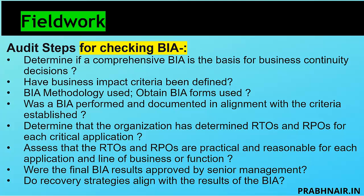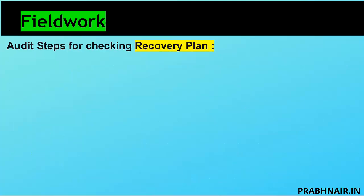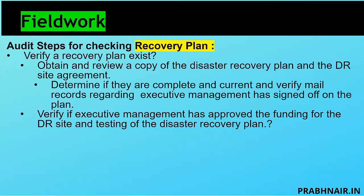After BIA validation, we look for the recovery plan. Based on the BIA, we prepare the recovery strategy, which drives the DR recovery plan. We check whether the plan is accurate. First, we verify the recovery plan exists — we obtain and review the copy of the DR plan, determine if it is complete and current, verify mail records, and compare the completion date of the DR plan's revision history against the mail records. We also verify if the document was sent via email for acceptance.